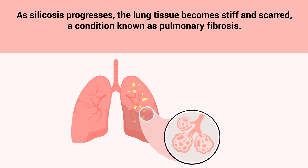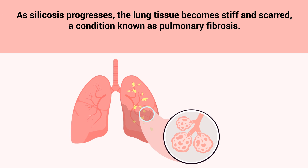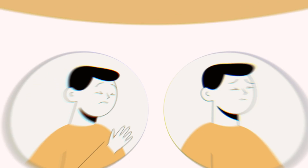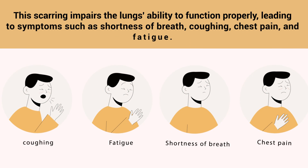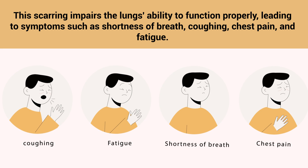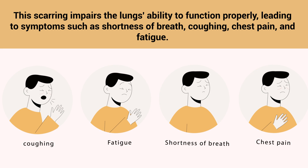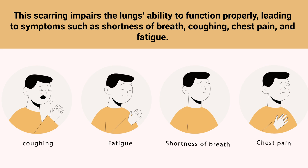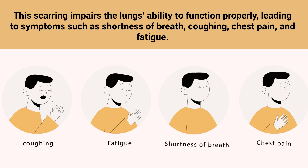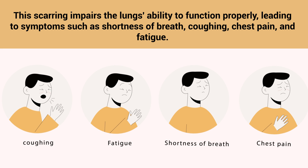As silicosis progresses, the lung tissue becomes stiff and scarred — a condition known as pulmonary fibrosis. This scarring impairs the lungs' ability to function properly, leading to symptoms such as shortness of breath, coughing, chest pain, and fatigue.